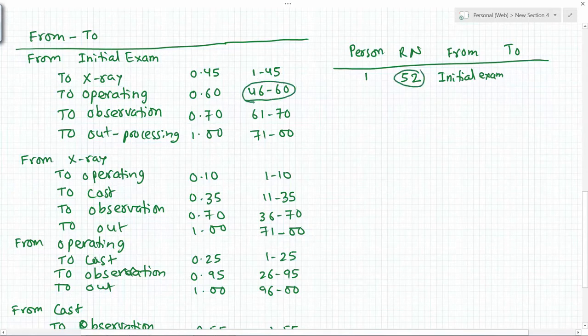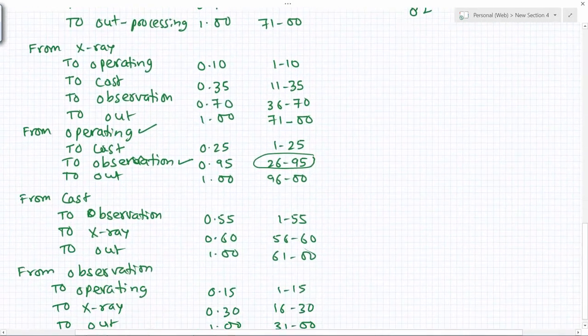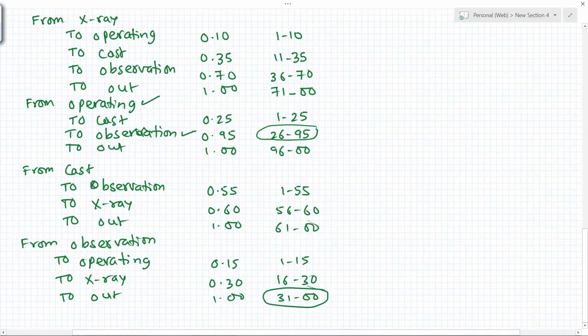The next random number is 37. The patient is in operating room, so 37 means the patient will go to observation. Next, 82. From observation, 82 means this block, so the patient will be out.